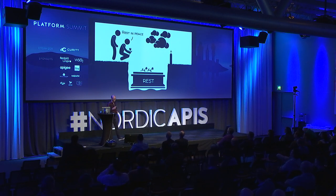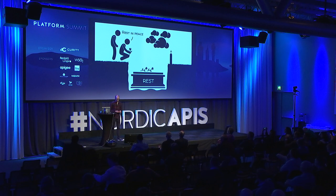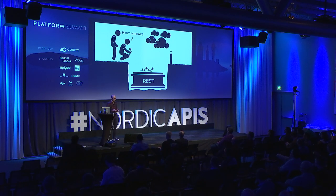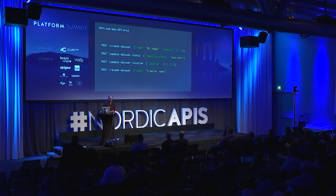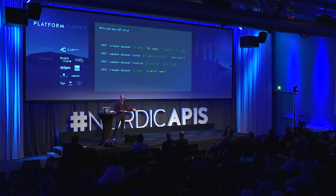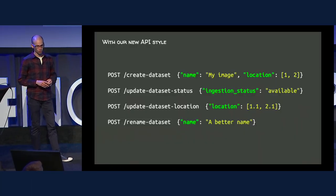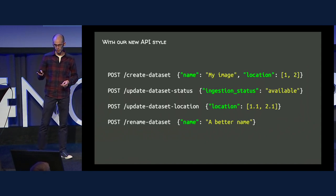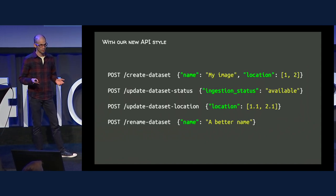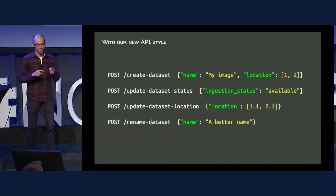So what did we do? We thought: we have many, many actions for a single resource, so we decided to be action-centric instead of resource-centric. We now have four dedicated endpoints: create datasets, update dataset status, update dataset location, and rename datasets. Much easier to handle authorization — for the ingestion example, we can limit the API schema to only that property and not have to handle all the combinations.